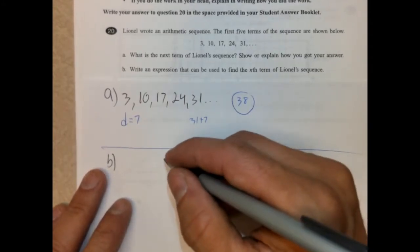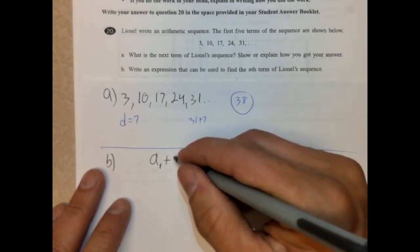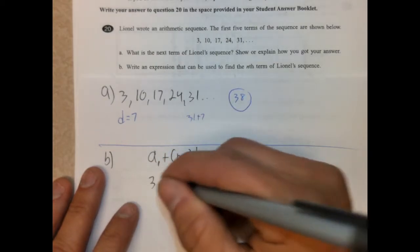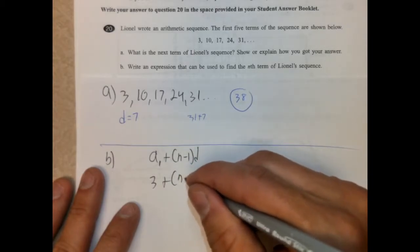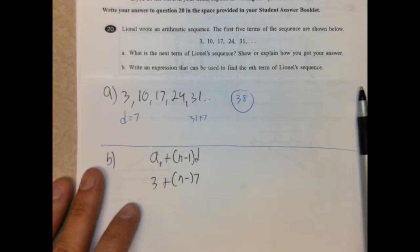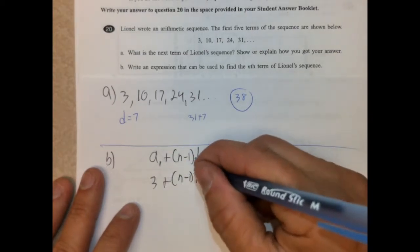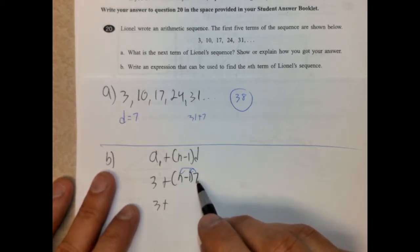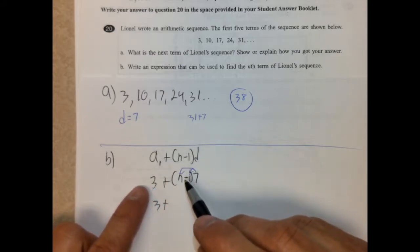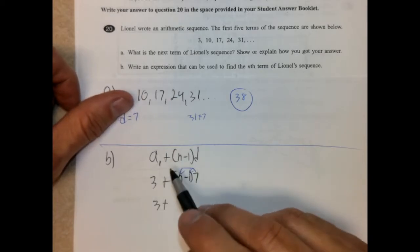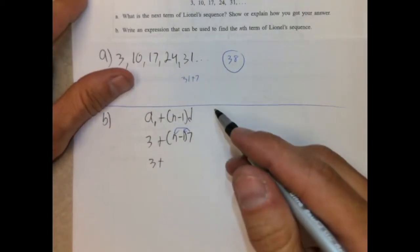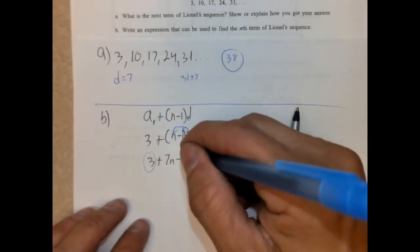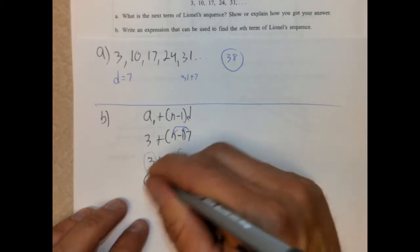Write an expression that can be used to find the nth term of Lionel's sequence. Okay. So alright, so we start with the term 1. So A sub 1 plus N minus 1 times D. So that's the arithmetic sequence formula right here. So this is our first term, which in this case is 3, plus N is the desired term, which we're going to leave in terms of N minus 1. And then D is the common difference, which in this case is 7. Let's go ahead and distribute the 7. So 7 times N is 7N, and 7 times negative 1 is negative 7. Let's combine like terms here. 7N and 3 minus 7 is negative 4. That's it.